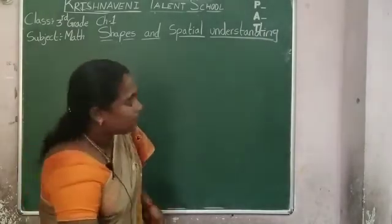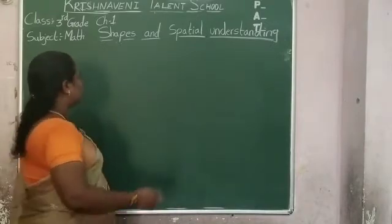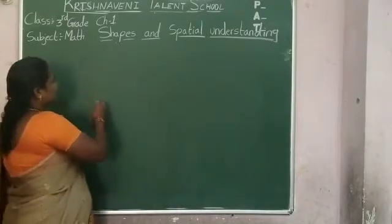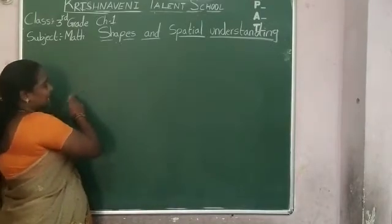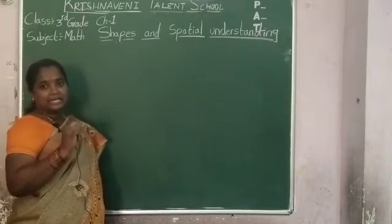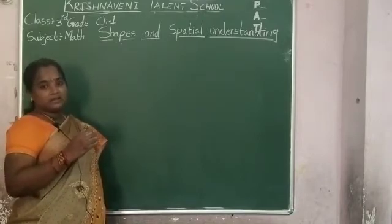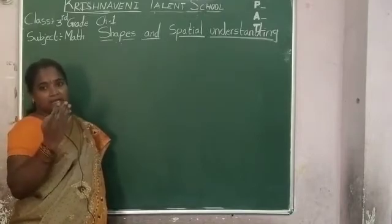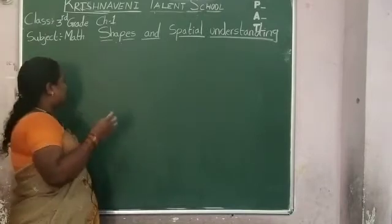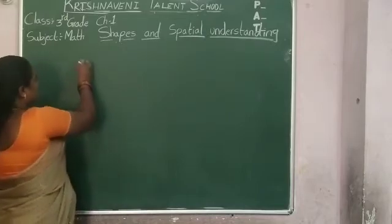Now, first shape. What are the four basic 2D shapes? Triangle, rectangle, square, circle. So now let us discuss each shape.